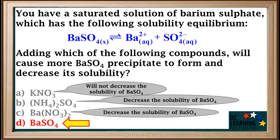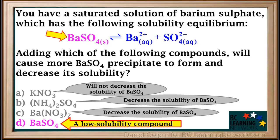Lastly, we'll look at BaSO4. By looking at the solubility table, we see that BaSO4 is a low solubility compound, so it does not dissolve enough to supply a significant number of any ions. Also, it is the very same compound as the one forming the saturated solution in this question. This will have no effect on the solubility of barium sulfate.